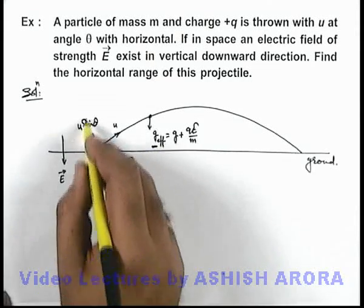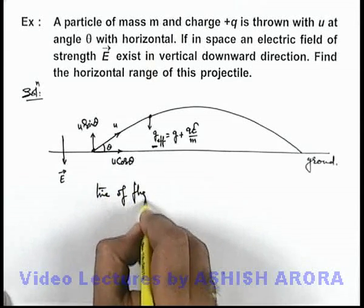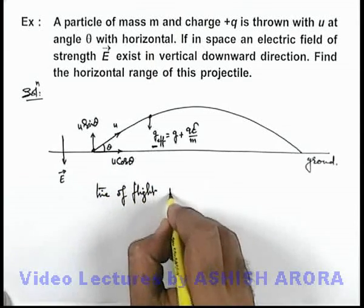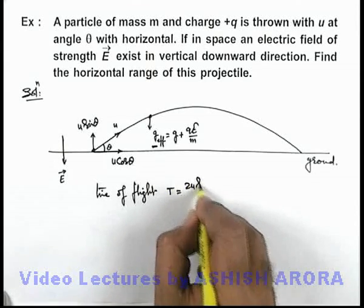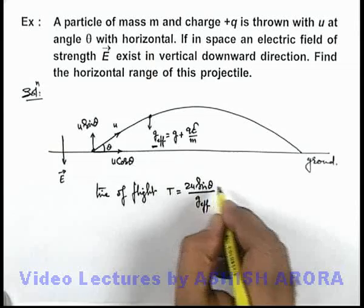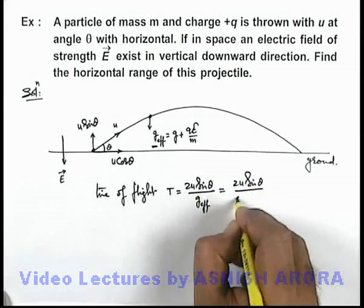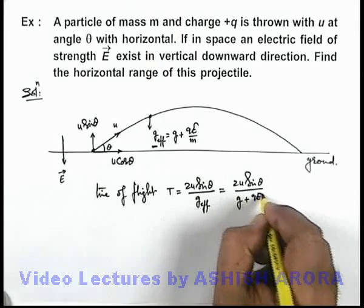Now using this vertical direction of motion we can find out the time of flight of this particle as T is equal to 2u sin θ by g_effective, which is written as 2u sin θ by (g + qE/m).